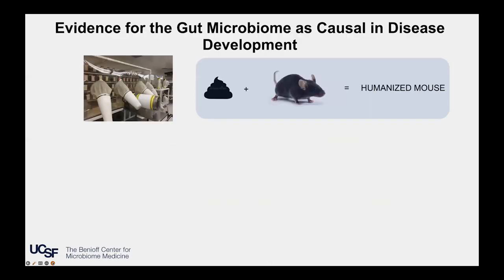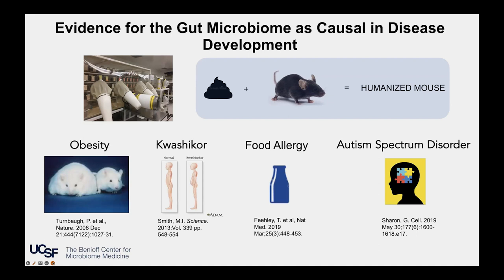But how do we know that these perturbations in the gut microbiome are actually drivers of disease as opposed to just a bystander effect of the disease process itself? To do that, we leverage a tool called gnotobiotic mice — animals that are sterile, raised without any microbes colonizing them inside or out. What we can do is transfer the fecal material from a healthy control or perhaps a patient experiencing a condition or disease into these mice to provide them with human microbes. We call these humanized mice. Using this mouse model, we now have an ever-increasing range of conditions and diseases that we know are driven by the gut microbiome.